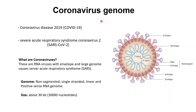Generally speaking in virology, two different names are used for the virus and the disease. For example, in the case of HIV, the name HIV is used for the virus and AIDS is used for the disease.